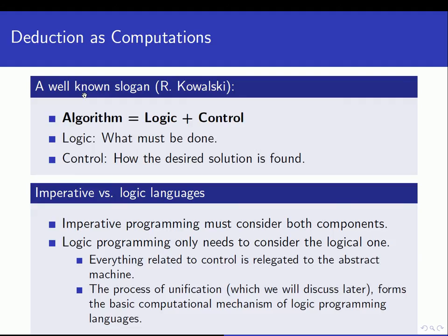There is a well-known slogan by Kowalski — a kind of an equation that says: Algorithm equals Logic plus Control. He is basically saying that when we have an algorithm, we can divide it up into two parts: the logic part and the control part. The logic part is what must be done, and the control part is how the desired solution is found. Imperative programming must consider both these components. As programmers in C, C++, Java, and so on — both in imperative and object-oriented languages — we must specify both the logic part and the control part.